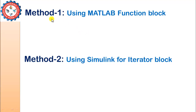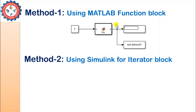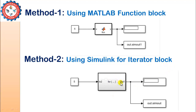For the implementation in Simulink we have two methods. In the first method you can use the MATLAB function or simple MATLAB user defined function block. By using this function block you can perform the required task. The other method is to use the Simulink for iterator block. The first method is simpler for implementation — if you have MATLAB code you can utilize it directly. Method two is a little more complex because you have to implement the for loop entirely inside Simulink using different blocks.